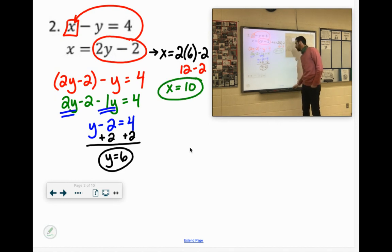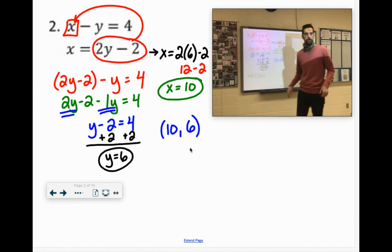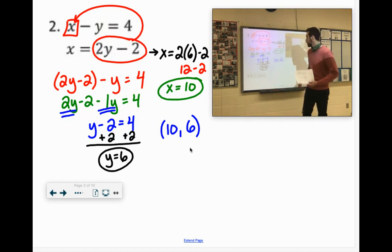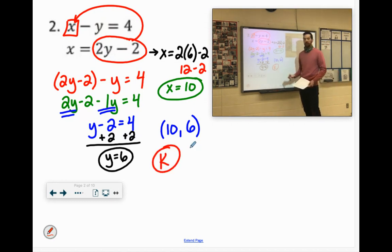Writing that as a coordinate then, our x was 10, our y was 6. Let me see what letter that corresponds to on the back here. Just got to grab a sheet myself. 10, 6 corresponds to K. So on the front, on blank number 2, put a K.